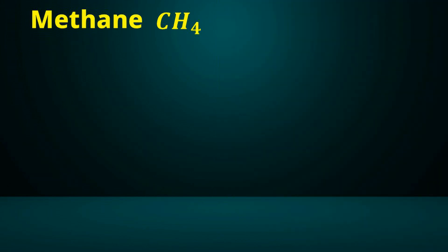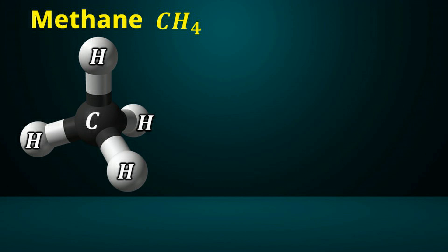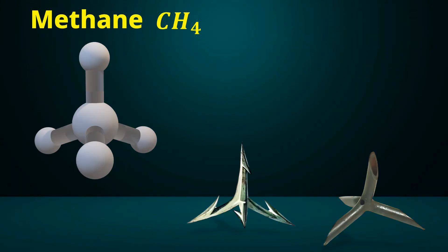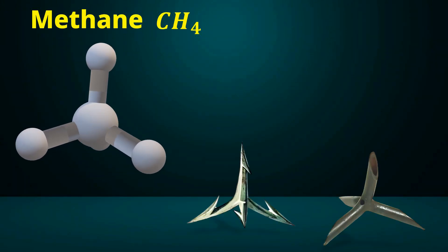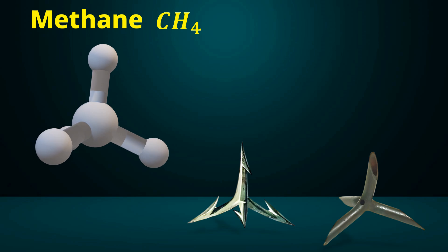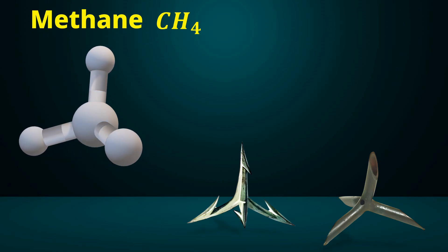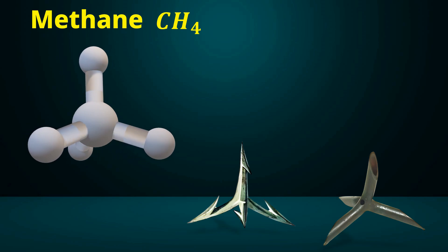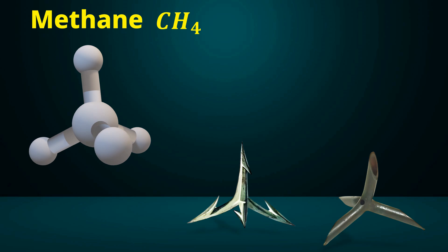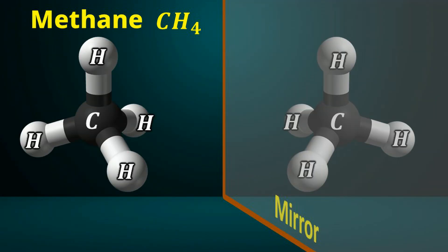Let us now look at methane, the gas commonly referred to as natural gas. A methane molecule consists of one carbon atom and four hydrogen atoms arranged in a unique shape called a tetrahedron. Have you noticed the shape of a caltrop used to puncture tires? It has three legs on the ground and one pointing upward, with all angles being equal. The structure of a methane molecule is similar, with the carbon atom at the center and the four hydrogen atoms symmetrically arranged around it. If you take the mirror image of a methane molecule, it is identical to the original, so methane is also a non-chiral molecule.